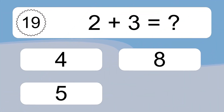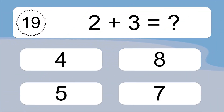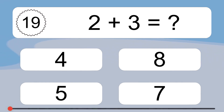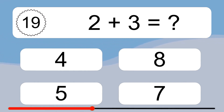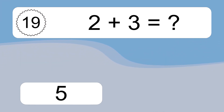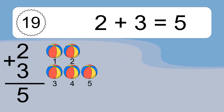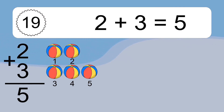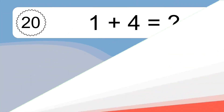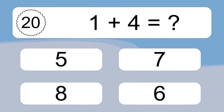2 plus 3 equals what? 2 plus 3 equals 5. Let's count it. 1, 2, 3, 4, 5.